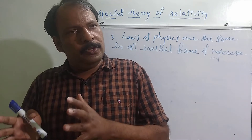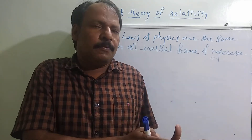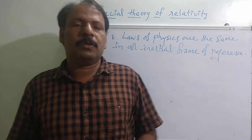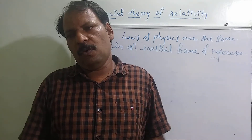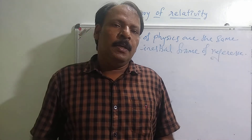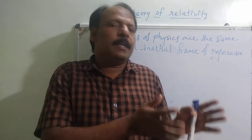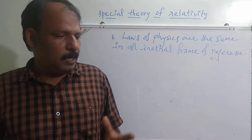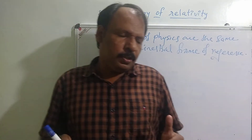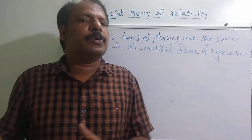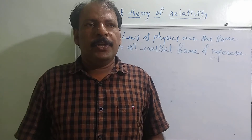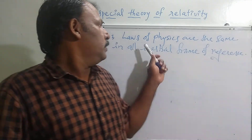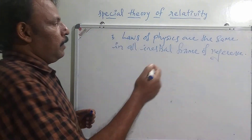You can transform the equations from one frame of reference to another frame of reference. The form of the equations, or the laws, should be the same in all frames of reference. In other words, these equations should be covariant — meaning using a systematic way you can transform the equations from one frame to another and they should preserve the same form. This is the first postulate of Special Theory of Relativity.